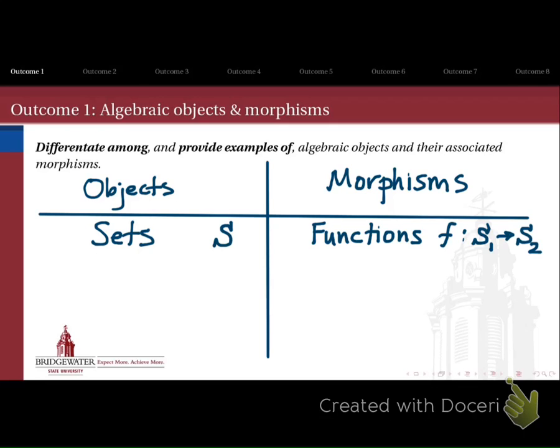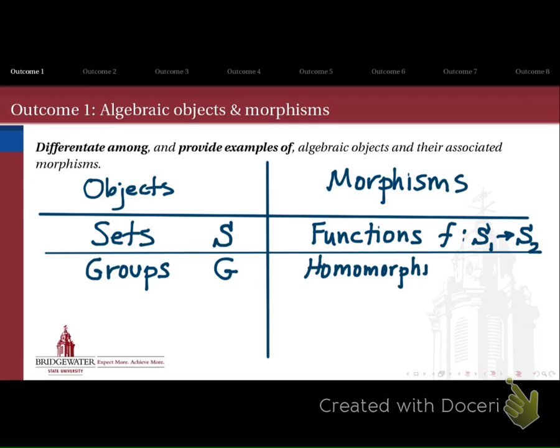For instance, between the objects that we call sets are morphisms that we call functions from one set to another. That's our basic algebraic object and basic algebraic morphism. In Abstract Algebra 1, you learned about groups as a kind of object, and the morphisms connecting one group to another were homomorphisms — because they also respected the structure that makes a group something more than a set, namely the product that makes a group a group.